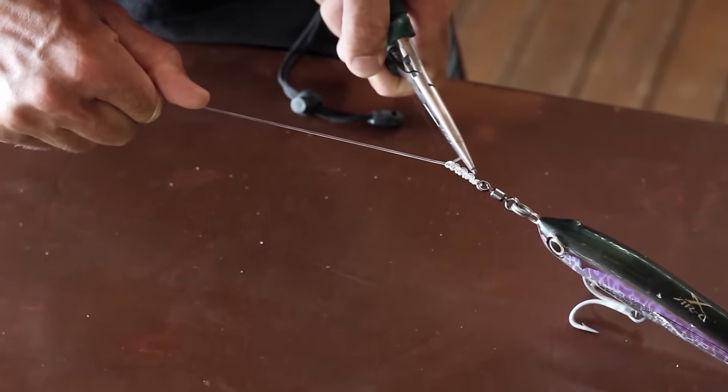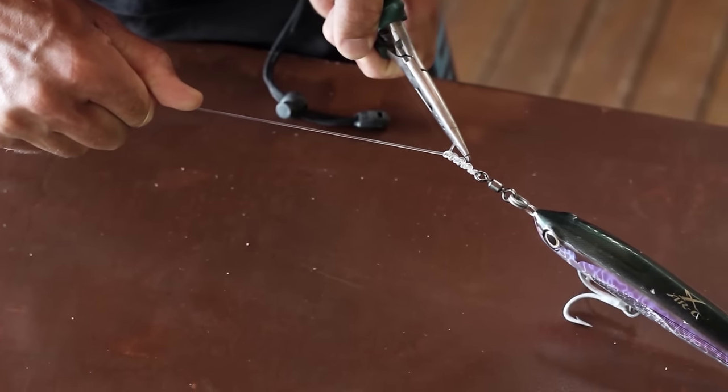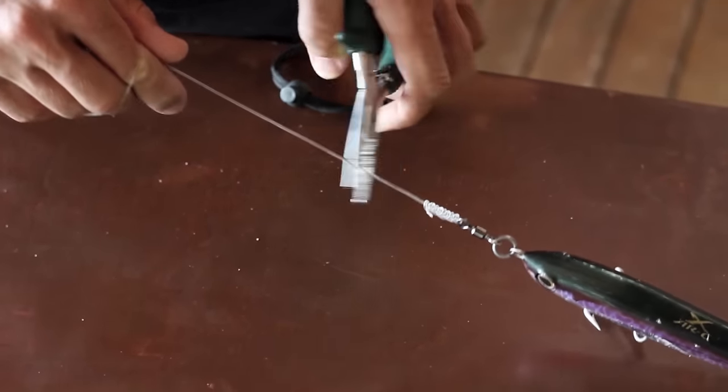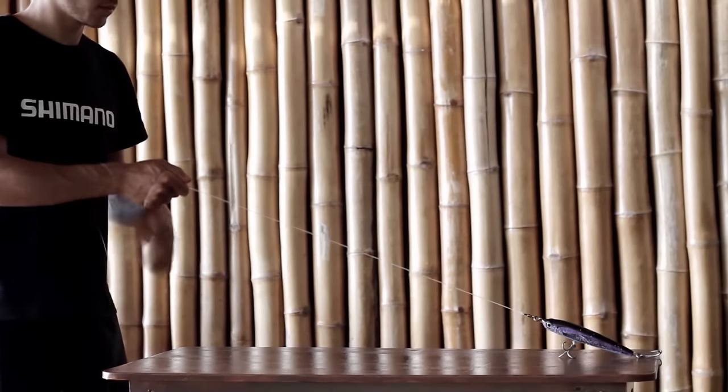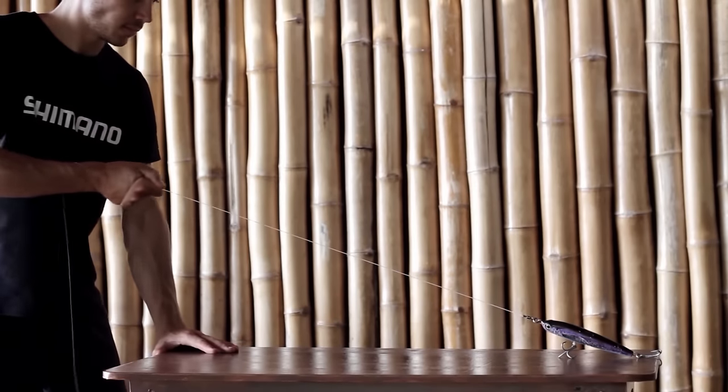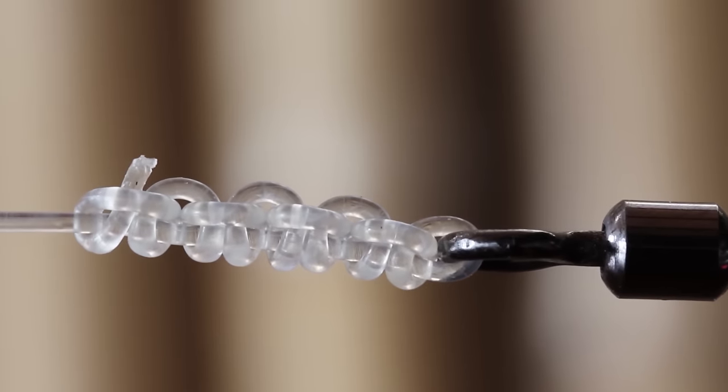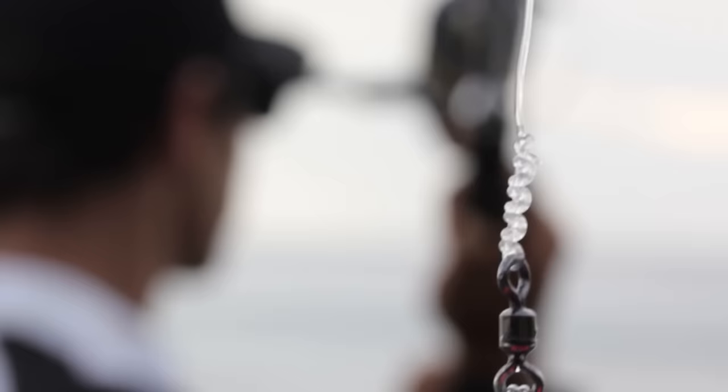When fishing with poppers and stick baits, with the zero stretch braided lines, stiff rods and relatively short leaders to maximize casting distance, the AG Chainknot, when combined with a shock leader, really will act like a spring and take a lot of the shock out of the strike.